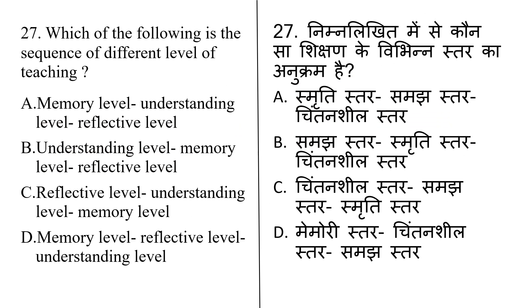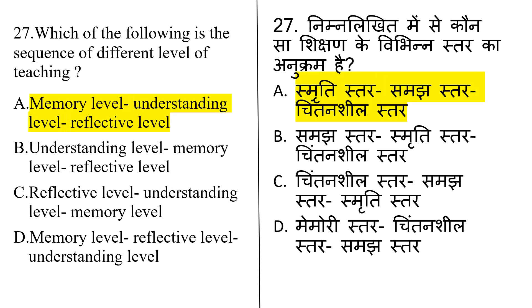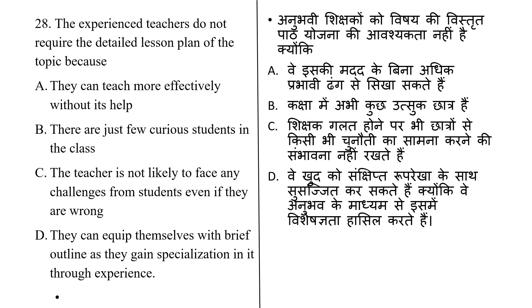Which of the following is the correct sequence of different levels of teaching? Options are: Memory Level, Understanding Level, Reflective Level; Understanding Level, Memory Level, Reflective Level; Reflective Level, Understanding Level, Memory Level; Memory Level, Reflective Level, Understanding Level. The correct answer is Option A: Memory Level, then Understanding Level, then Reflective Level.